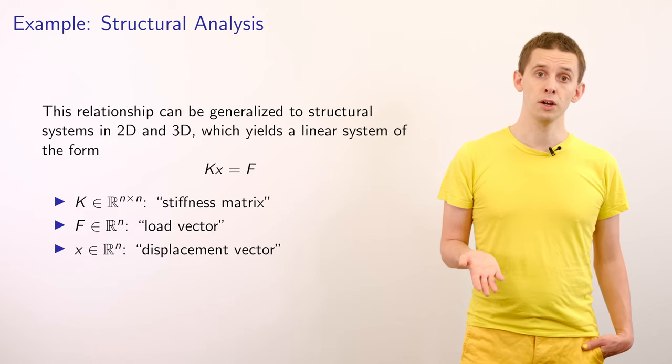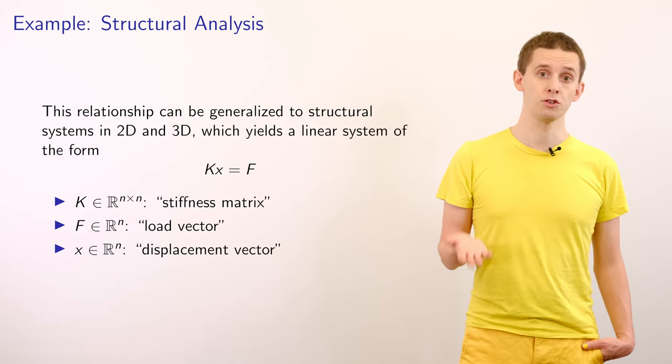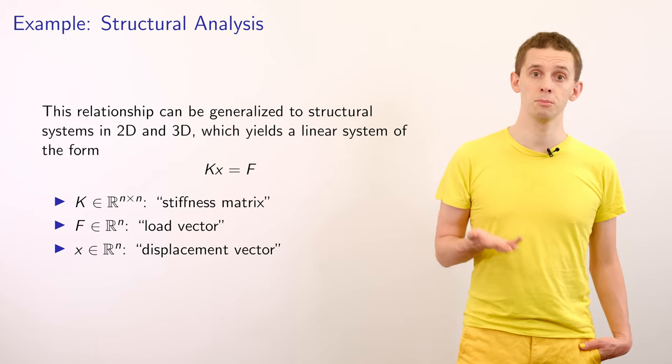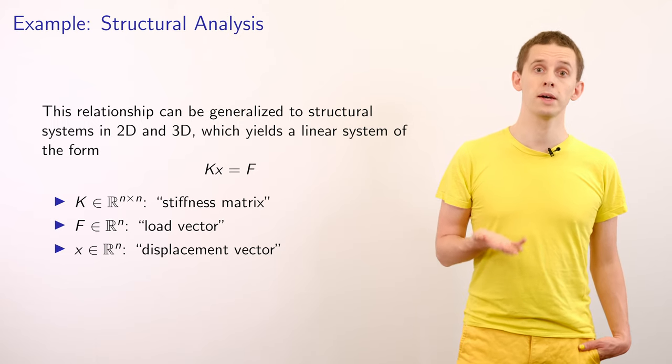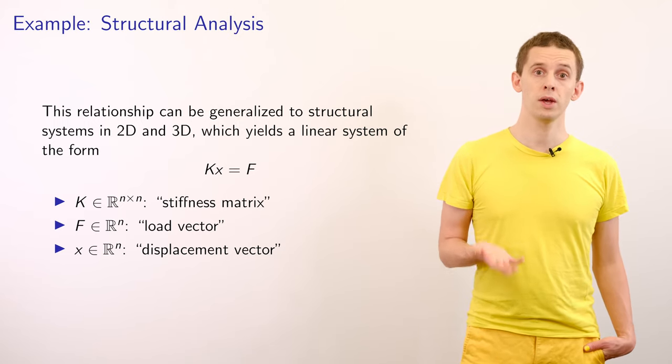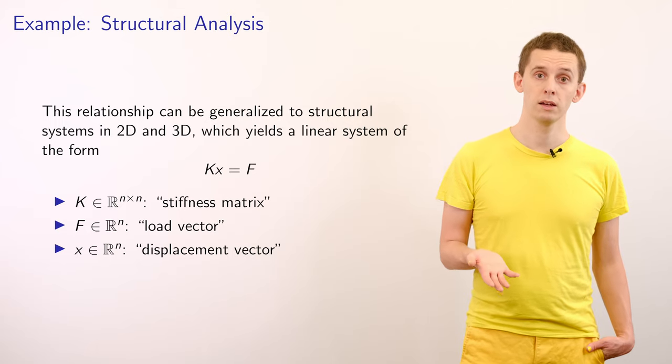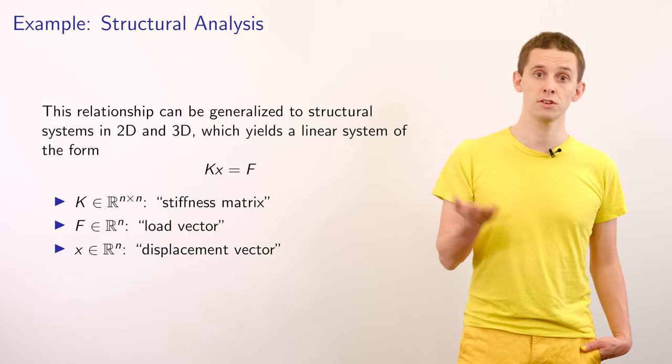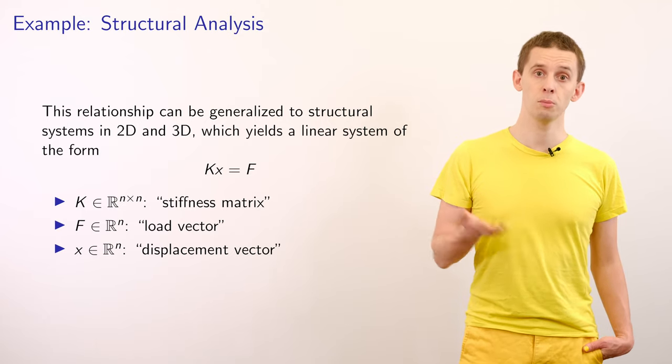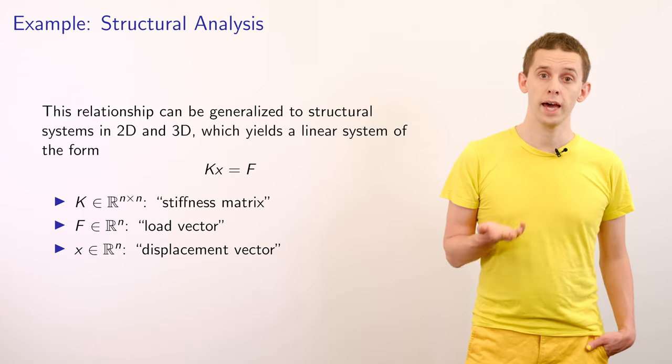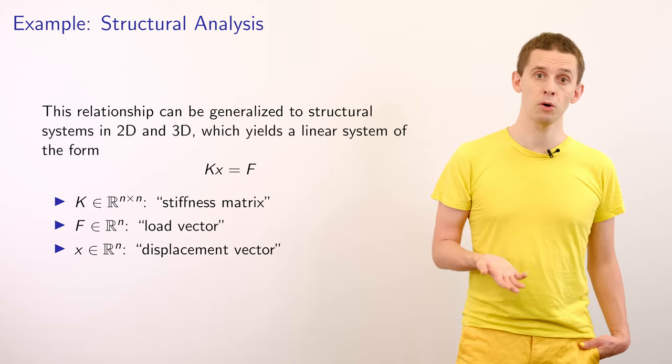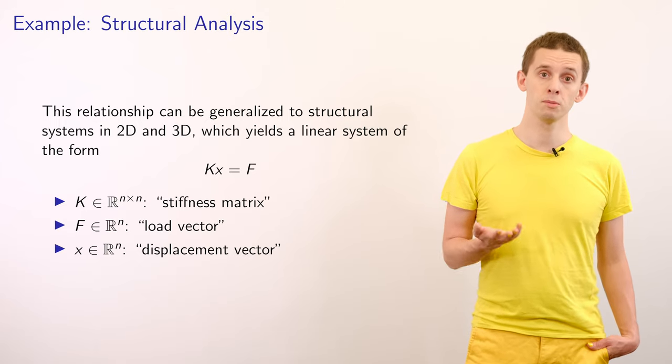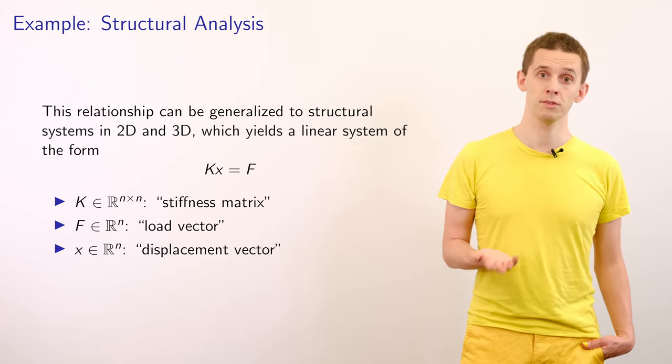Now from this scalar equation, we can look at composite structures that have many components that are all connected together. And that will lead us to large matrix systems of the form Kx = F. And so here, the matrix K is referred to as a stiffness matrix. And it encapsulates all of the connections and stiffnesses between the different components of our structure. And x is a displacement vector that tells us how all parts of our structure will deform. And F is a load vector that tells us about all of the loads that we're applying to different parts of our structure.